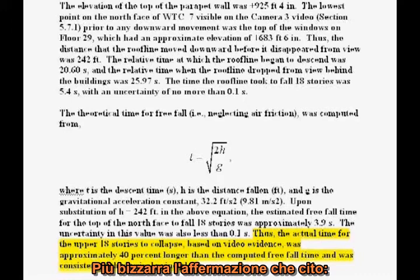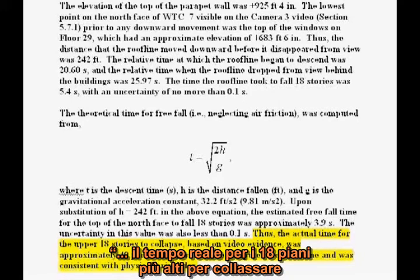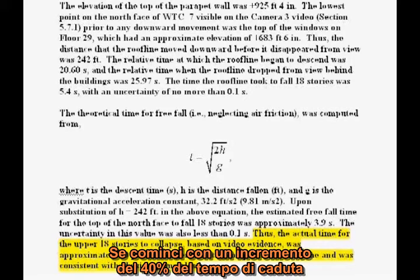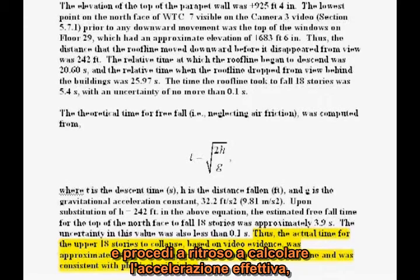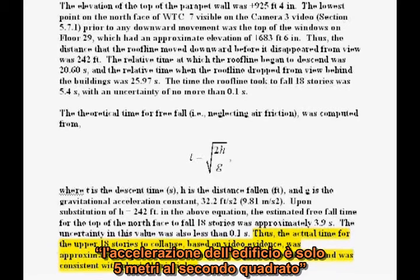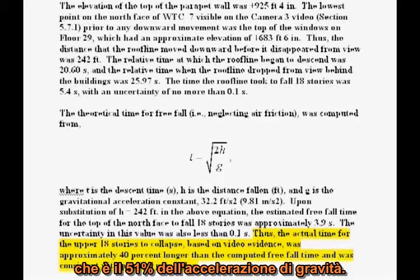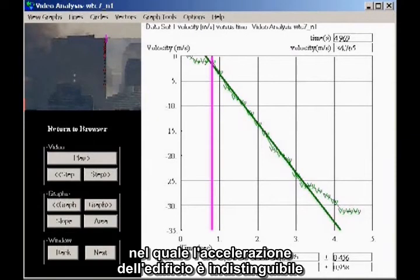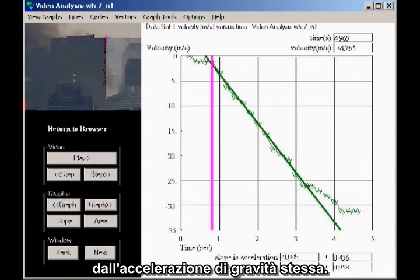More bizarre is the claim that "the actual time for the upper 18 stories to collapse, based on video evidence, was approximately 40% longer than the computed freefall time." If you start with a 40% increase in the time of fall and work backwards to compute the effect on acceleration, their claim is equivalent to saying the acceleration of the building is only 5 meters per second squared — which is 51% the acceleration of gravity. Our results, however, clearly show a significant stretch of time in which the acceleration of the building is indistinguishable from the acceleration of gravity itself — complete freefall.